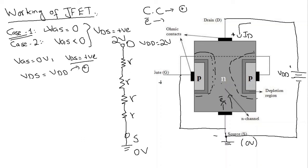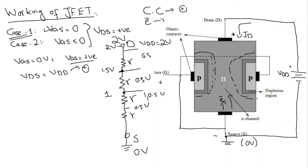At the drain junction I have two volts. Across every resistance there is a potential difference of 0.5 volts. So at the next junction I have 1.5 volts, then 1 volt at the next point, and 0.5 volts after that, down to zero volts at the source. So moving upward from source to drain: point A is at 0.5 V, point B is at 1 V, and point C is at 1.5 V.